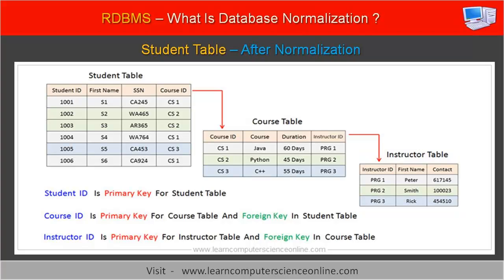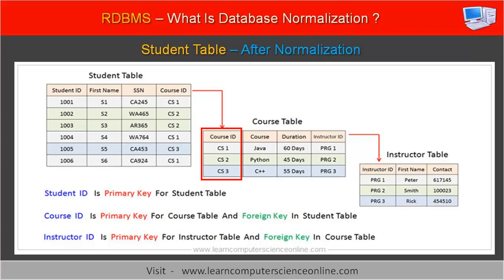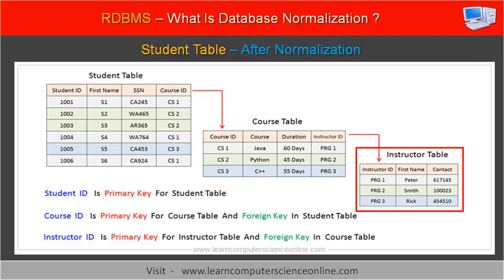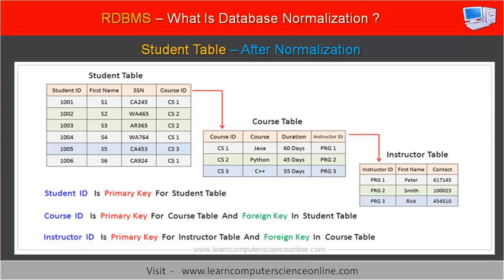The next step in the database normalization process is to define the primary key for each table. A relationship is defined as an association between two entities. Depending upon the association, the relationship between the tables needs to be defined by using primary key and foreign key constraints. For example, the course table contains course ID as its primary key field. This course ID field has been included in the student table as a foreign key. Similarly, the instructor table contains instructor ID as its primary key field, and this instructor ID has been included in the course table as a foreign key. After completing the normalization process, the data redundancy problem has been eliminated in all three tables. As a result, the database anomalies caused due to the data redundancy problem are also now resolved.